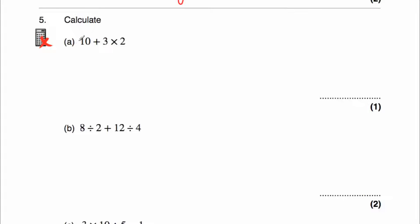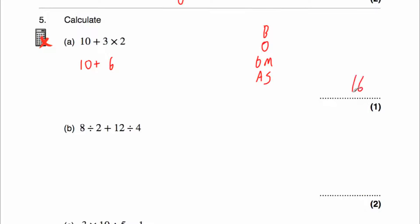Question 5a: calculate 10 plus 3 multiplied by 2. We have a multiplication and an addition; we do multiplications before addition. So we do 3 times 2 first, which is 6. We still have 10 plus in front, so 10 plus 6 is 16. Our answer is 16.